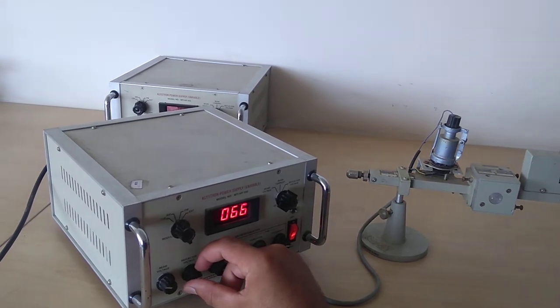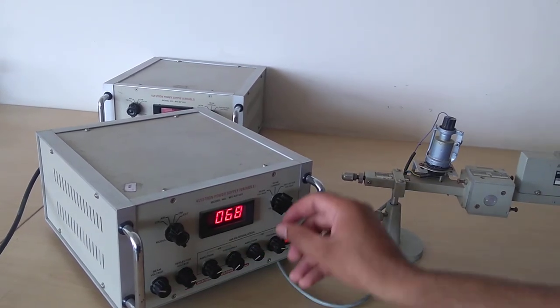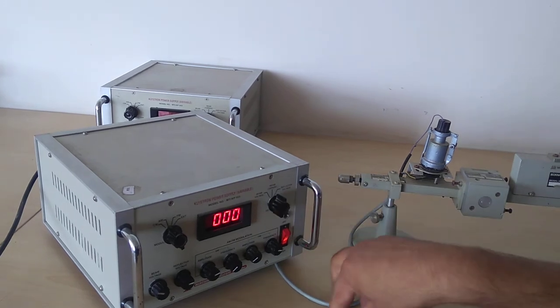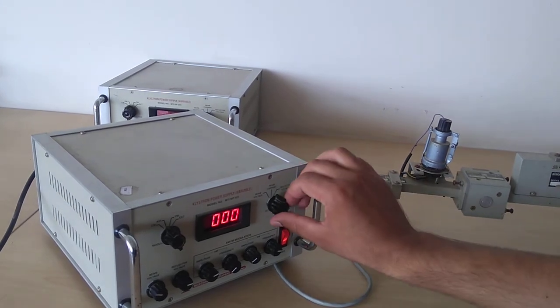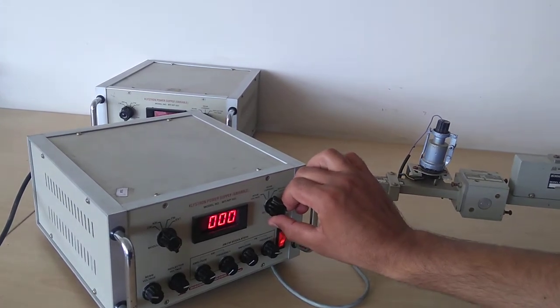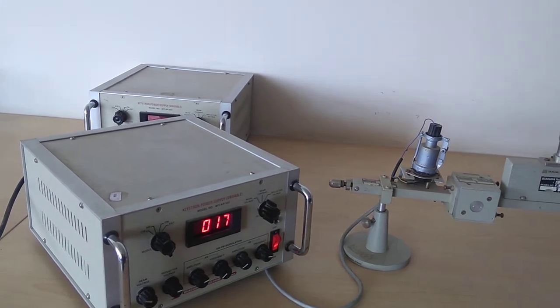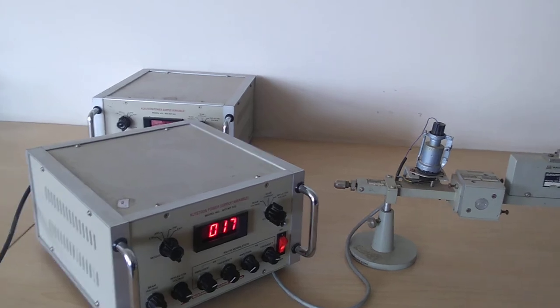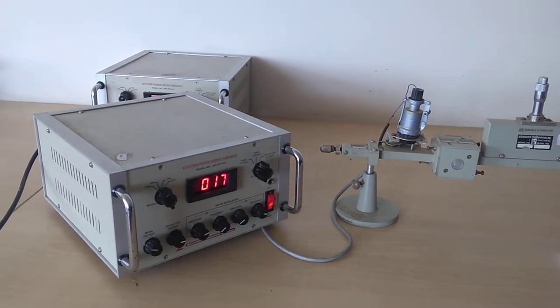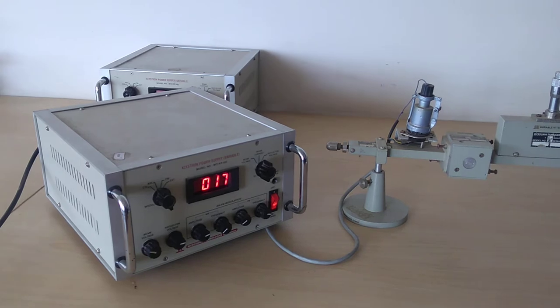I set it at 66 to 67 volts, then I observe the amount of current. When I tune it, the current increases automatically. The range of current for this test bench is around 17 milliamperes.